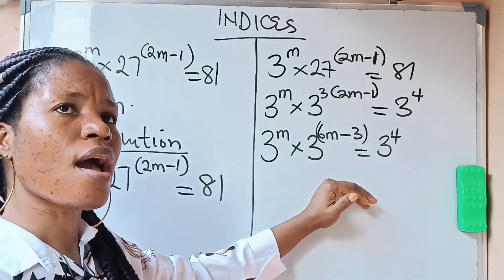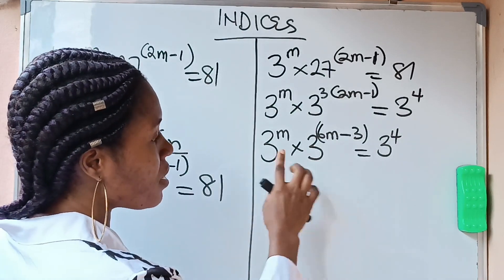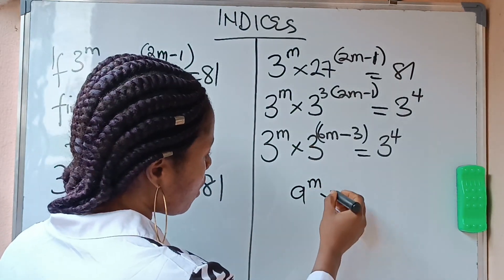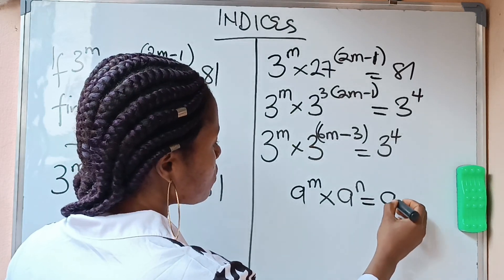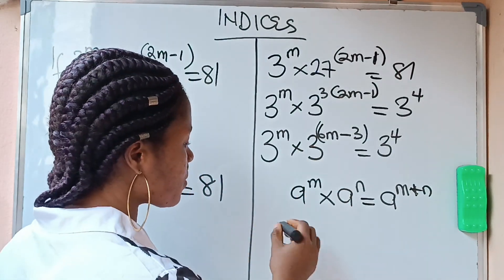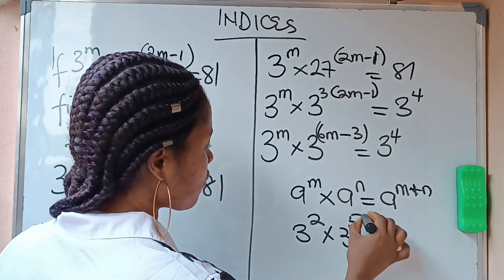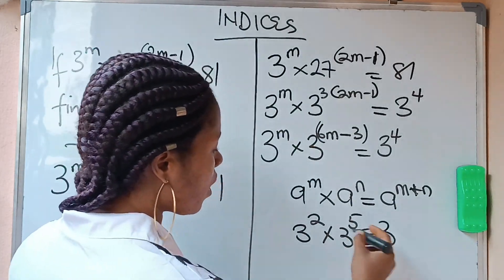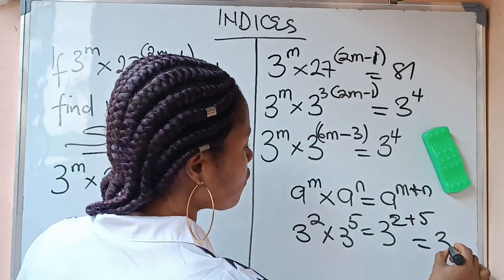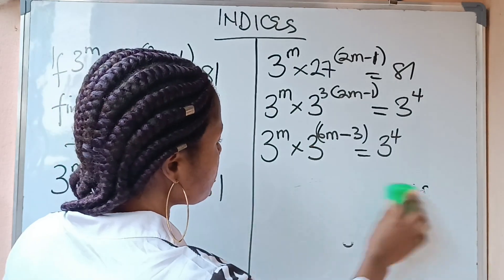We're going to apply the multiplication law of indices. That's why we reduced everything to the same base — because this law only works for numbers in the same base. The law states that a raised to the power of m, times a raised to the power of n, equals a raised to the power of m plus n. For example, 3^2 times 3^5 equals 3^(2+5), which is 3^7.